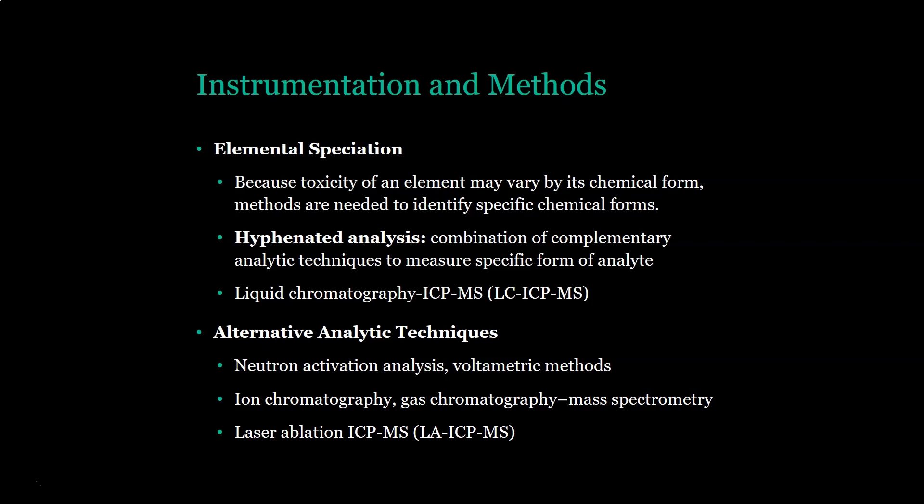There are also a few alternative analytic techniques for trace metals: neutron activation analysis, voltammetric methods, ion chromatography, gas chromatography-mass spectrometry, and laser ablation ICP-MS (LA-ICP-MS). And that is all for trace metal analysis.